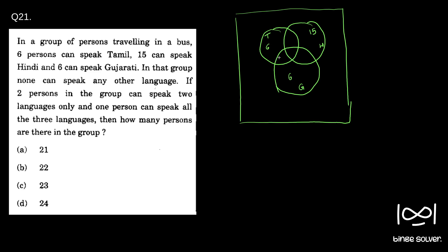Now, two persons in the group can speak two languages only. We are not sure which two languages that person speaks, but they belong to the overlapping region between two circles — that white region. Two persons belong there. And one person can speak all three languages, so the red region — the center — is one.